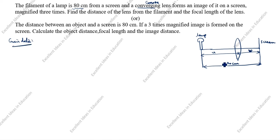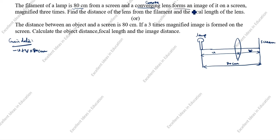So we have: minus U plus V equals 80 centimeters. The image is magnified three times. Since it is formed on a screen, it is a real image, so the magnification is negative — m equals minus 3.